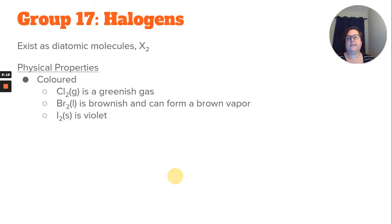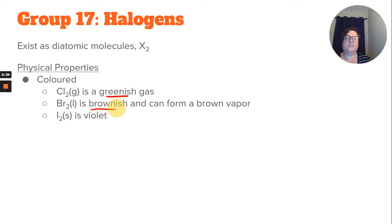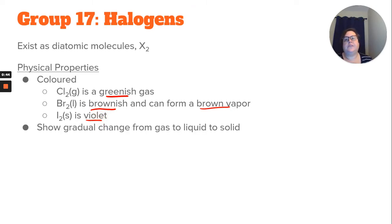For their physical properties, they are all colored, so you have to know these colors. Chlorine is a greenish or yellow color gas. Bromine is a brownish, dark red color and forms a brown or dark red vapor. Iodine is actually violet in color. They show a gradual change from gas at fluorine, to liquid at bromine, and solid at iodine.